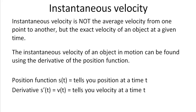Instantaneous velocity is not the average velocity — it's the exact velocity of an object at any given time. I'm not asking for average velocity between two points; I'm asking what is the instantaneous velocity at one single point. The instantaneous velocity of an object in motion can be found using the derivative of the position function. The position function S of t tells you your position at time t. The derivative of the position function, S prime of t, is a formula for the velocity at any single time t.